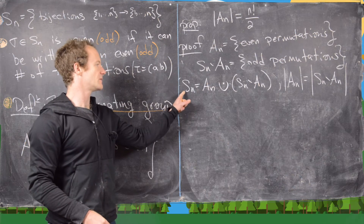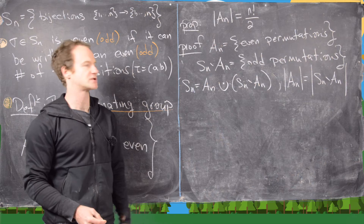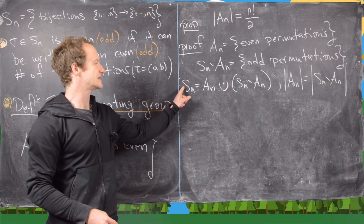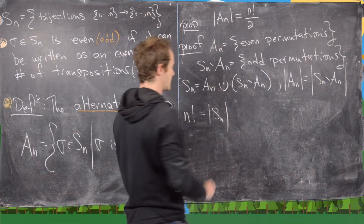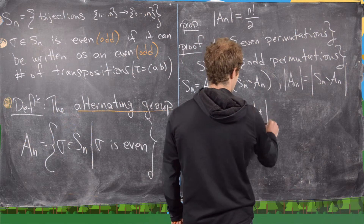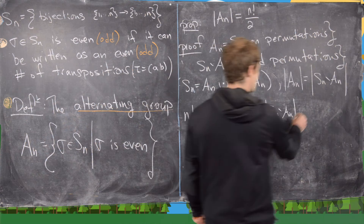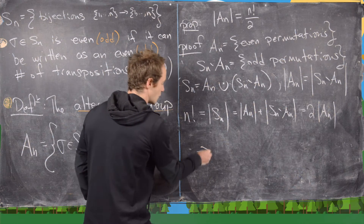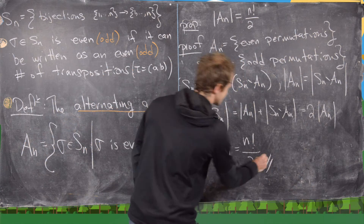We have decomposed Sn as the disjoint union of even permutations and odd permutations, and shown that the number of even and odd permutations is the same. Taking this set equation in terms of counts: n! equals the number of elements in An plus the number of elements in Sn minus An. Since these two are equal, we get n! = 2·|An|, and solving gives |An| = n!/2, which is exactly what we wanted to show.